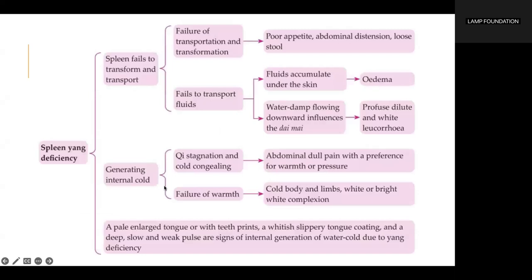Clinical manifestations: poor appetite, abdominal distension, abdominal dull pain which can be relieved by warmth or pressure, cold limbs, shortage of chi, fatigue, lack of strength, wide complexion, a bland taste in the mouth, no thirst, loose stool, general edema, scanty urine, or profuse dilute and white leucorrhea.